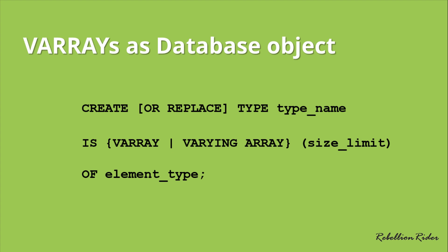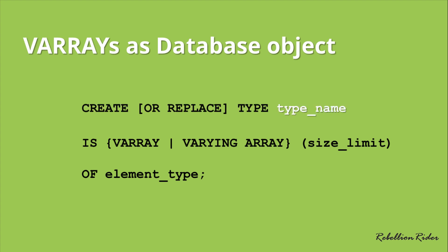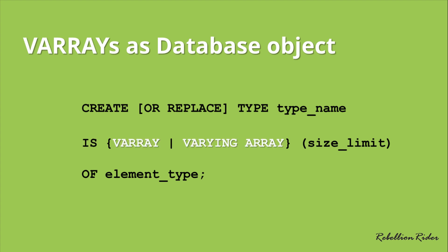Let's check out the syntax for creating a VARRAY as a database object. We use the CREATE TYPE statement, which has an optional OR REPLACE clause. This clause looks for a type with the same name — if it finds one it changes its definition, otherwise it creates one. Then there is the type name, which can be anything you want, followed by the keyword IS. Then we have the keyword VARRAY or the reserved phrase VARYING ARRAY — you can use whichever you feel comfortable with. The purpose is to tell the compiler what type of collection you are creating.